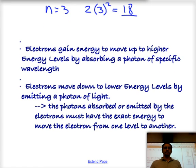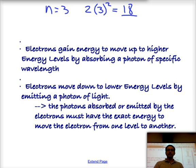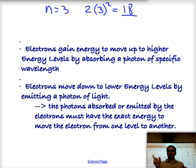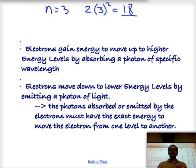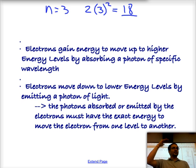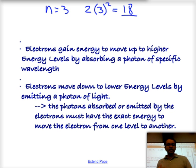The next two rules go together. Electrons can gain energy to move to a higher energy level by absorbing a photon of light — a particle of light — and it has to have a specific wavelength, because that specific wavelength represents the energy difference between the two levels it's moving between. Similarly, electrons can move down to lower energy levels if they give off or emit a photon of light, giving away energy equal to the difference between, for example, energy level 2 and energy level 1.